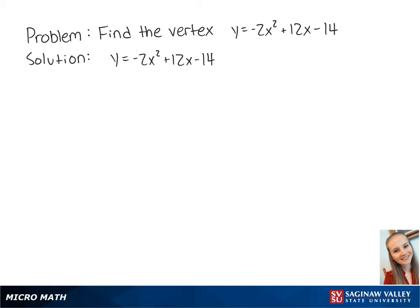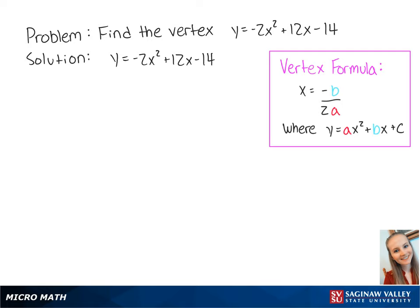For this problem, we want to find the vertex of the equation y equals negative 2x squared plus 12x minus 14. To find the vertex, we can use the vertex formula.